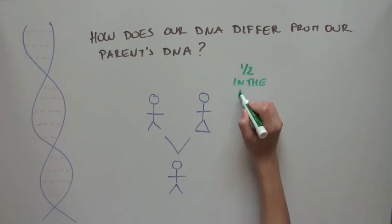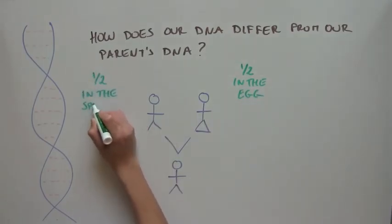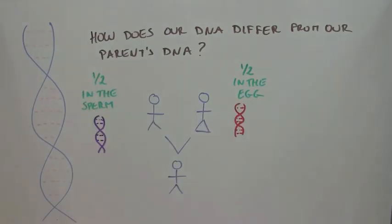We inherit half of our DNA from our mother and half from our father. The DNA from our mother is provided in the egg and the DNA from our father is provided in the sperm, which together with the egg makes the embryo. This is simple to understand, but the story of how we get our DNA sequence gets a little more complicated.